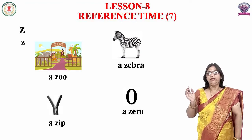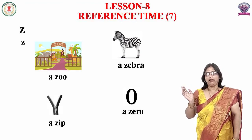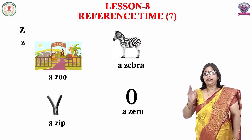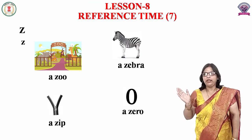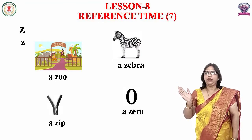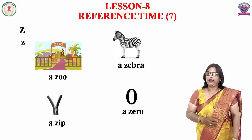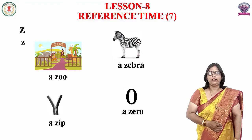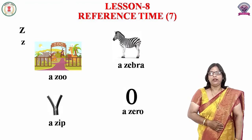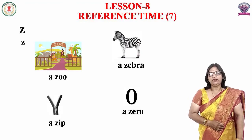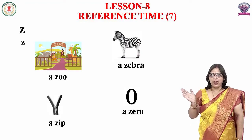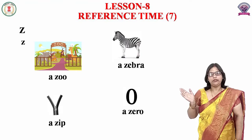Second word है zebra — Z, E, B, R, A, zebra। Third word है zip — Z, I, P, zip।